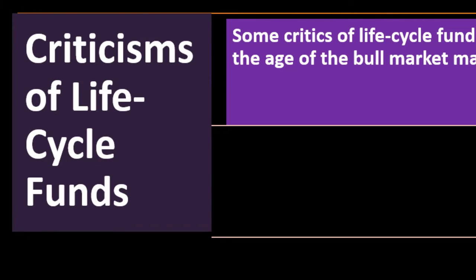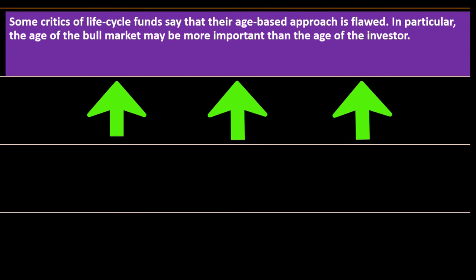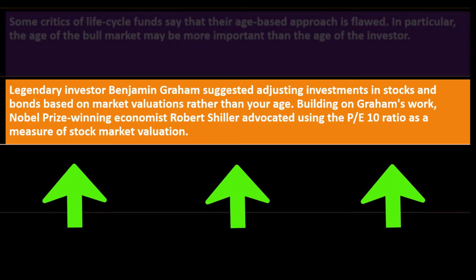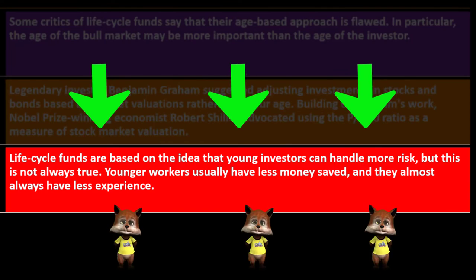Criticisms of life cycle funds: everything has its pros and cons. Some critics say their age-based approach is flawed. In particular, the age of the bull market may be more important than the age of the investor. Legendary investor Benjamin Graham suggested adjusting investments in stocks and bonds based on market valuations rather than your age. Building on Graham's work, Nobel Prize-winning economist Robert Schiller advocated using the PE 10 ratio as a measure of stock market valuation.